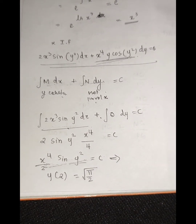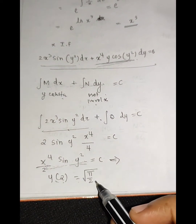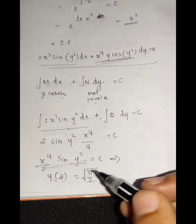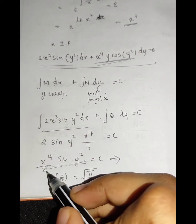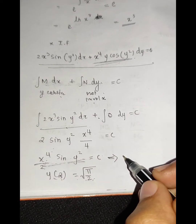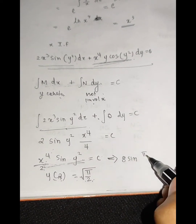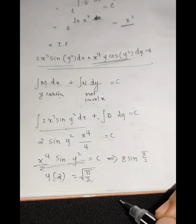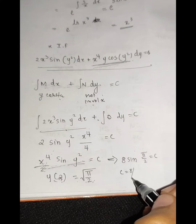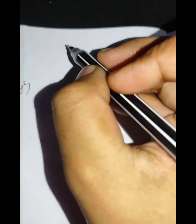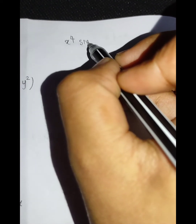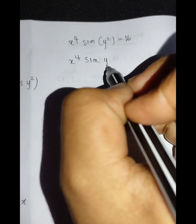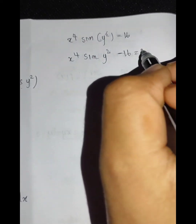Applying the initial condition y(2) = √(5π/2): substituting x=2 and y=√(5π/2) into the general solution. 2 raised to the 4th divided by 2 gives 8, and sin(5π/2) equals c, giving c equals 8.